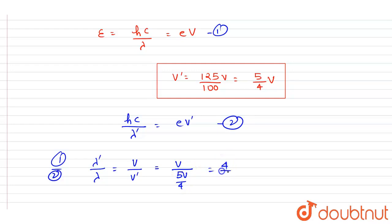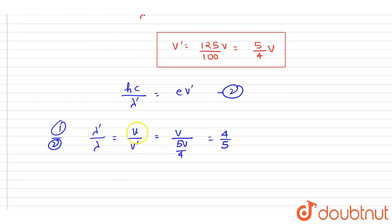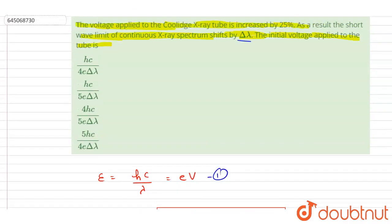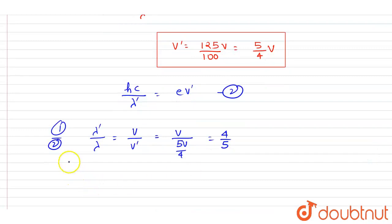So V by V dash, it will be 4 by 5. Now it is said that the shift here is delta lambda.